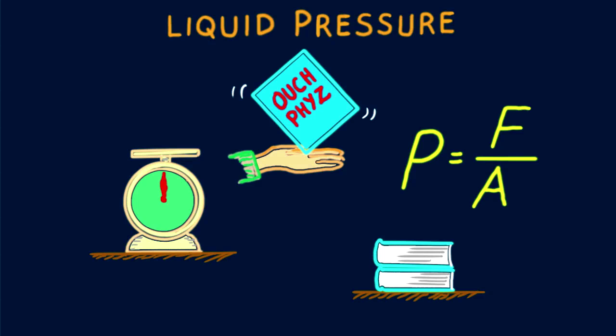If you place two identical books on the table, one atop the other, the combined weight is doubled and the pressure is also doubled. More force is exerted on the same area. Stack more books atop the two and weight and pressure further increase.